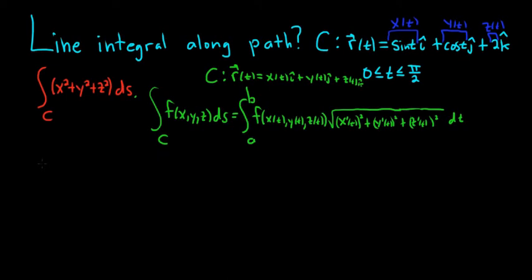So let's go ahead and work this out. Solution. We have our line integral over C of x squared plus y squared plus z squared ds. This is equal to the definite integral from 0 to pi over 2. Our a is 0, and our b is pi over 2.